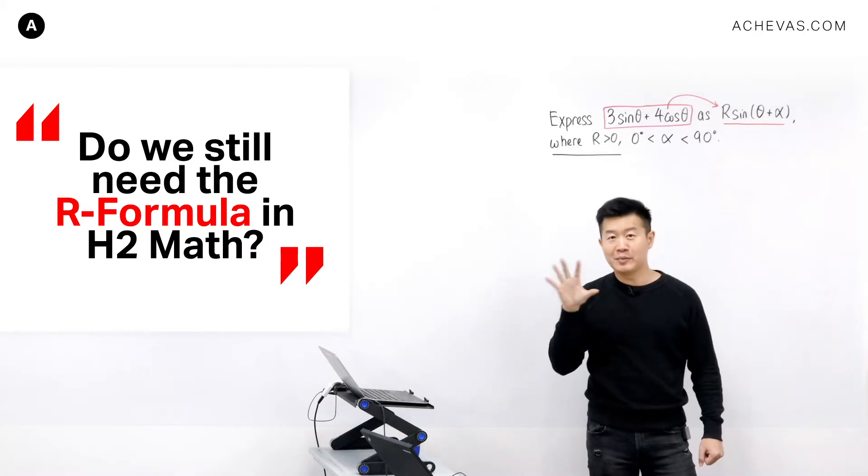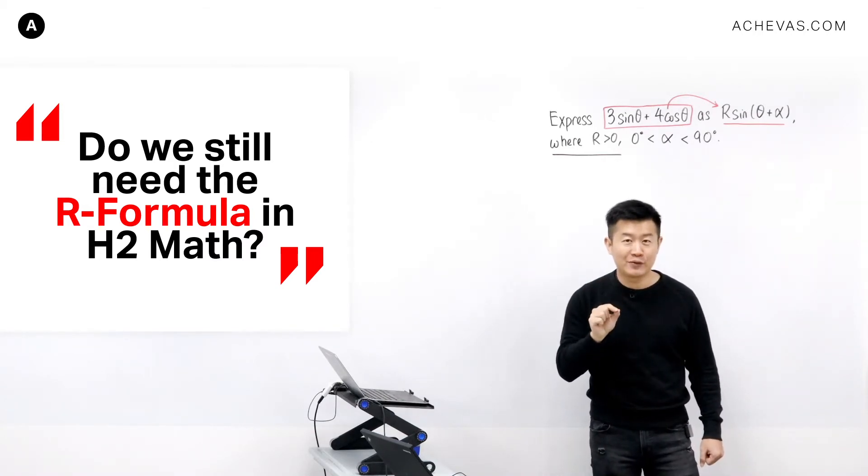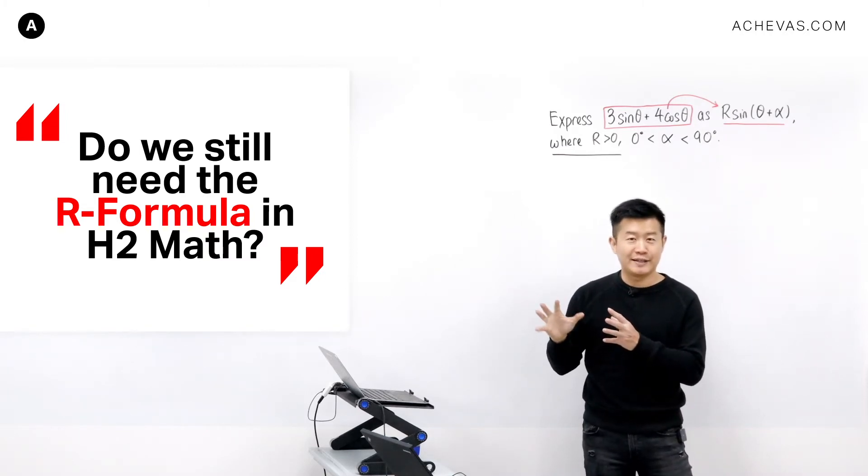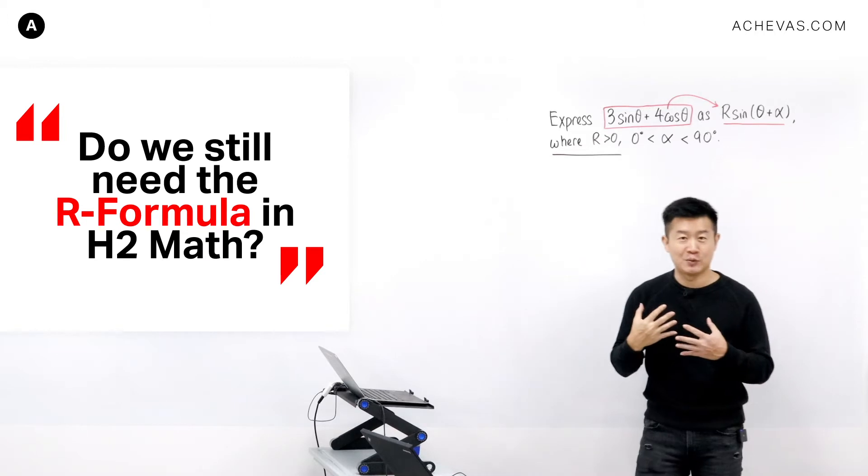R-formula has already been learned in secondary school, but I believe that there were still quite a few A-level students who didn't manage to recall how this was done. And the most likely reason that I can think of is because they have chosen to memorize it in their secondary school instead of also learning how this can be derived.